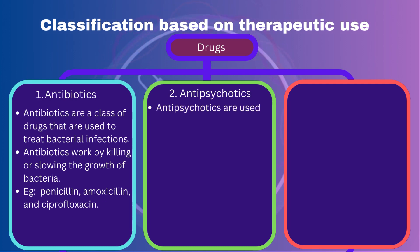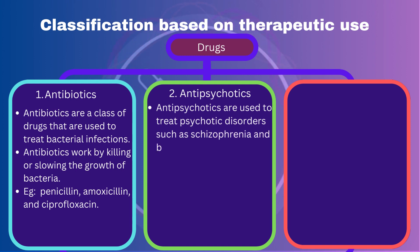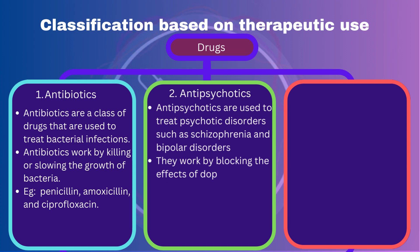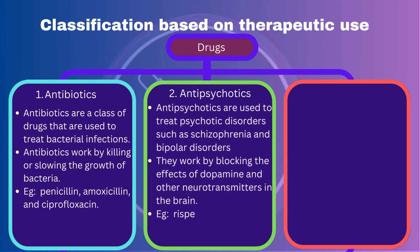Antipsychotics: Antipsychotics are used to treat psychotic disorders such as schizophrenia and bipolar disorder. They work by blocking the effects of dopamine and other neurotransmitters in the brain. They include drugs such as risperidone, olanzapine, and aripiprazole.